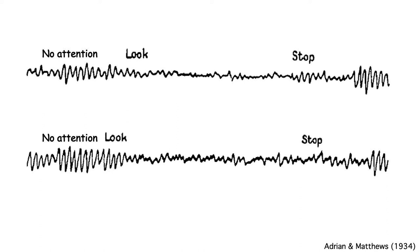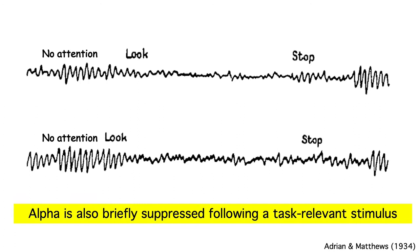More modern research has shown that if subjects are doing a task with a stimulus every couple of seconds, you'll see alpha during the period between the stimuli, and then the alpha is briefly suppressed when the stimulus appears and the subject has to respond. It's as if the appearance of the stimulus causes the subject to start paying attention again, but once the stimulus has gone and the subject has responded, attention is no longer necessary.